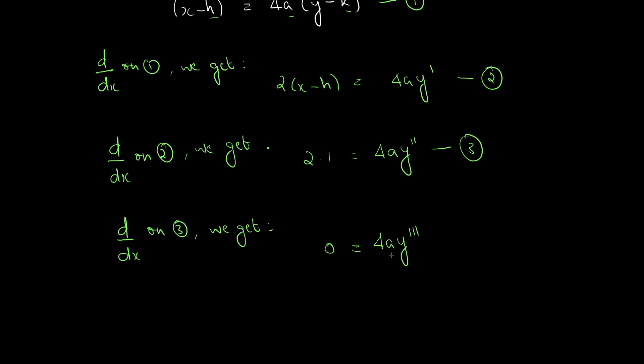Since it is a constant, we can divide both sides by 4a and this becomes, therefore, this becomes y triple dash equal to 0.